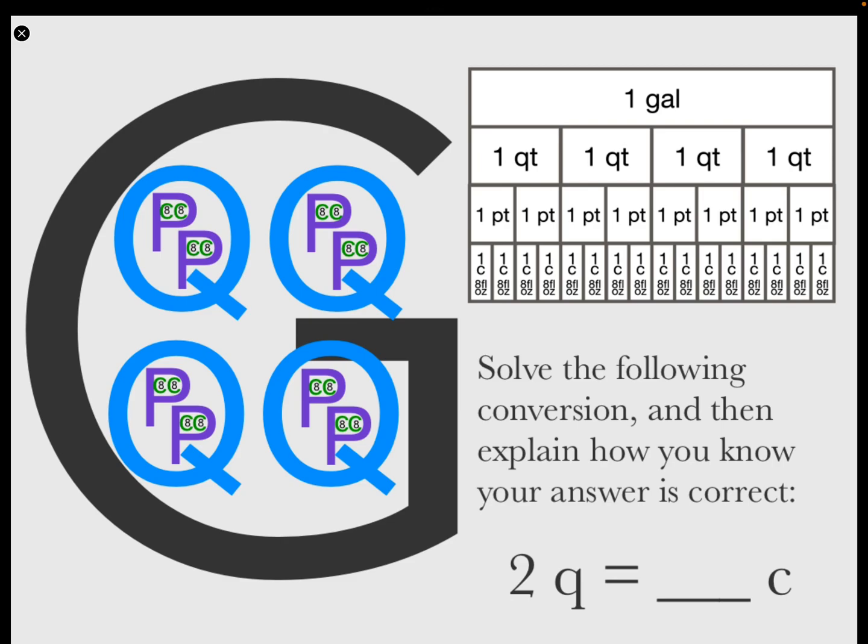So now I want you to solve the following conversion, and then explain how you know your answer is correct. Two quarts equals how many cups? Well, you probably figured that out. It equals eight.